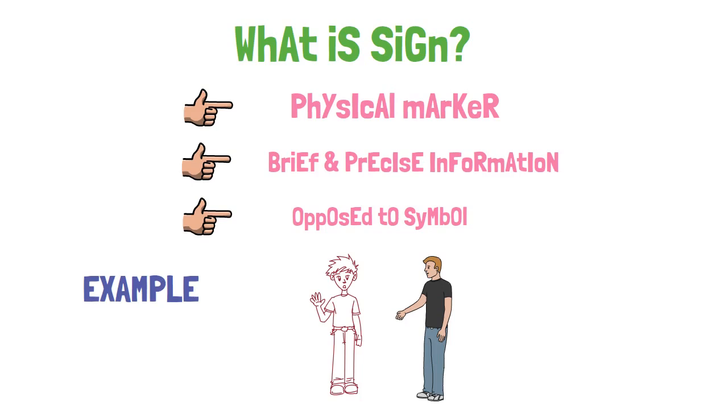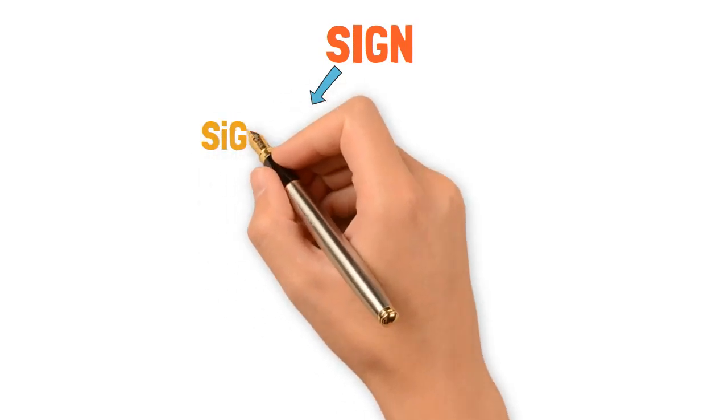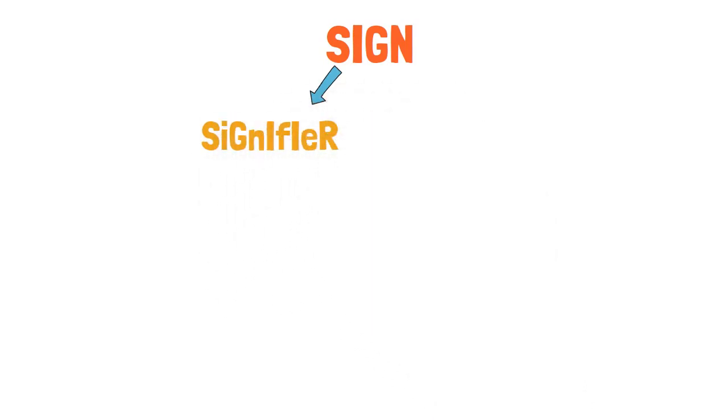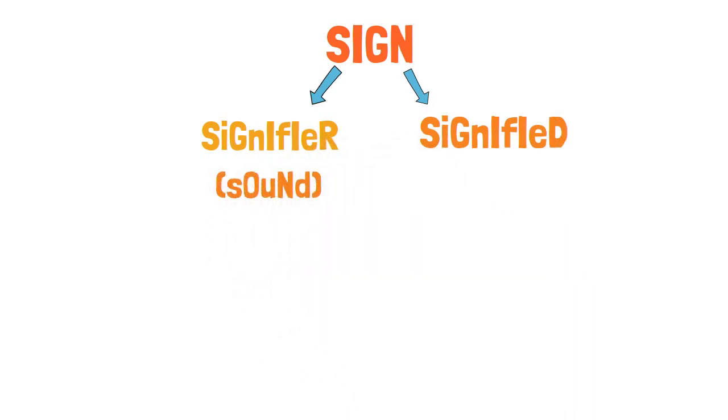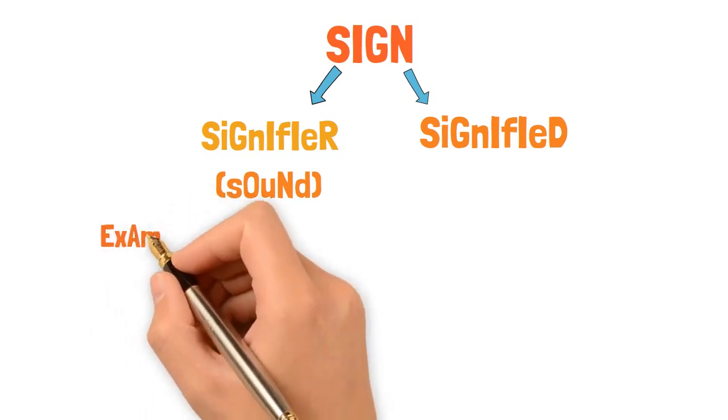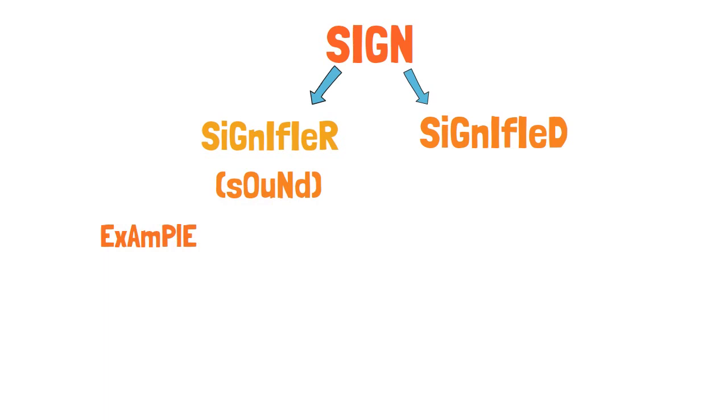A language consists of two parts - the first one is signifier and the next one is signified. Signifier is the actual sound when we utter any kind of word. For instance, when I say tree, the word tree definitely has a sound. The sound of the word tree comes under the category of signifier.